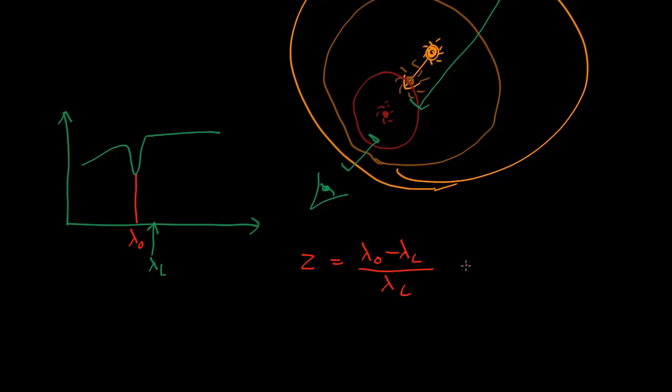This is called the redshift, and you can see it's positive if the line were over here, because in that case lambda observed is bigger than lambda laboratory. That means that the wavelength has become longer than is expected, which means the object is moving away from us. In this particular case, lambda observed is less than lambda laboratory, so this does actually have a negative value, which corresponds to a blue shift.